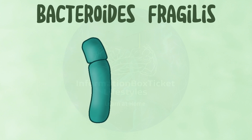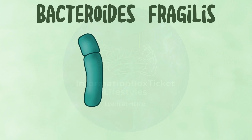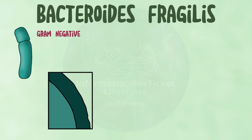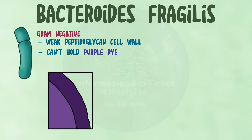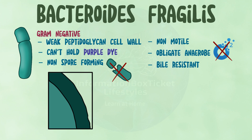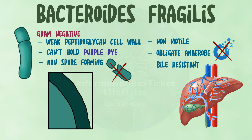Now let's learn more about this bacterium. Bacteroides fragilis is gram-negative, which implies it has a weak peptidoglycan cell wall that cannot easily hold purple dye when gram-stained. Furthermore, it is a non-spore-forming, non-motile bacterium. It is also an obligate anaerobe, which means it can only exist without oxygen. Another aspect is that it is bile-resistant and appears to prefer bile, which makes sense given that it dwells in the colon.